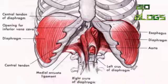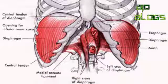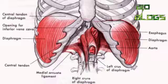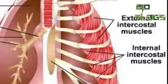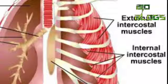Lungs do not contain muscle fiber but expand and contract by the movement of the ribs and diaphragm. The diaphragm is a sheet which separates the thorax from the abdomen. In its relaxed state, the diaphragm is dome-shaped. Ribs are moved by intercostal muscles. External and internal intercostal muscles found between the ribs and diaphragm help in creating a pressure gradient.